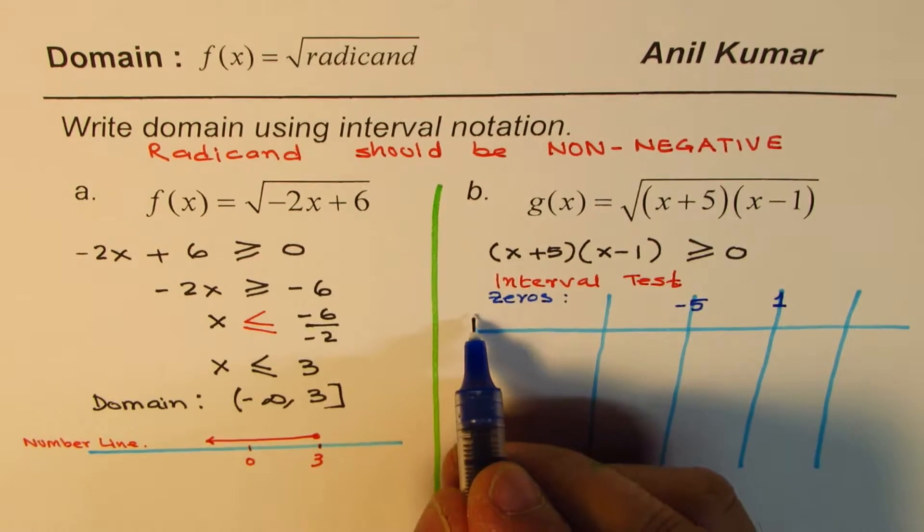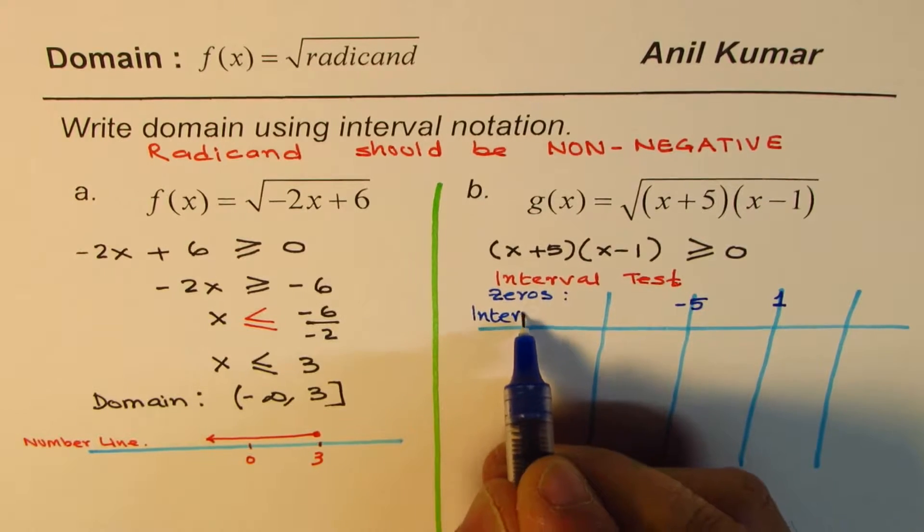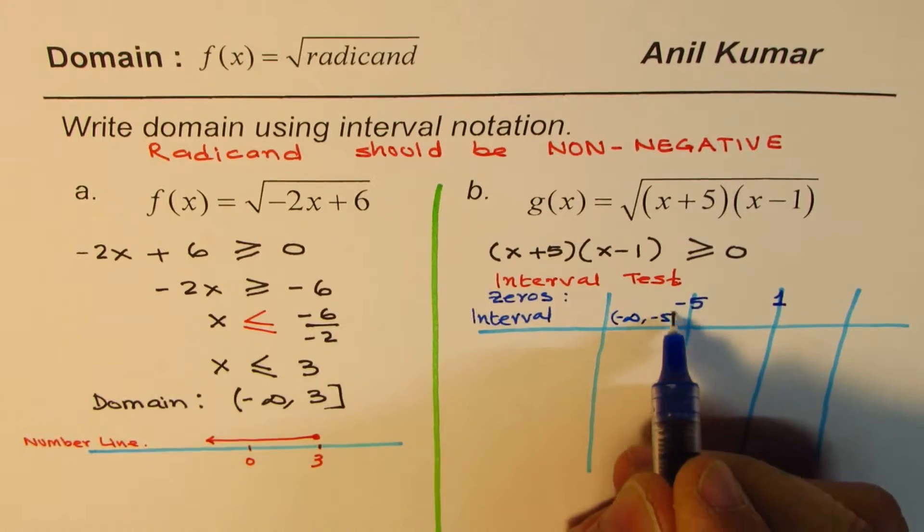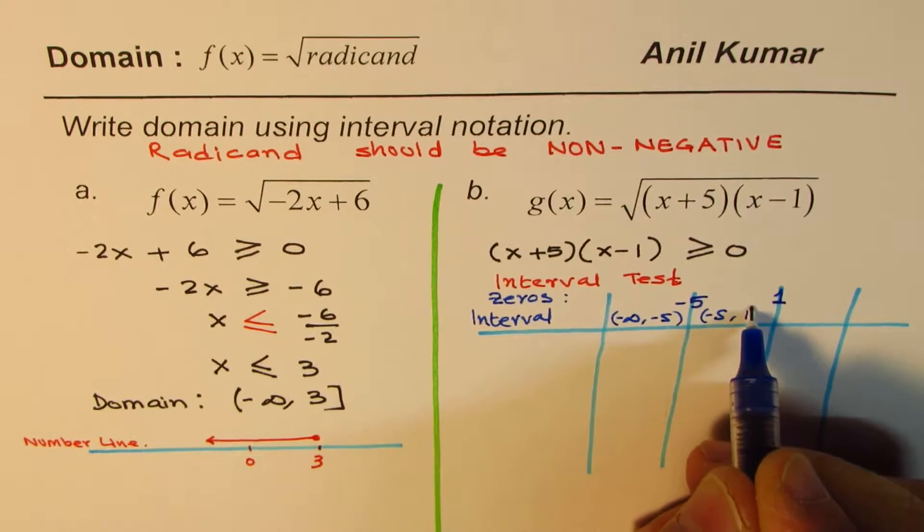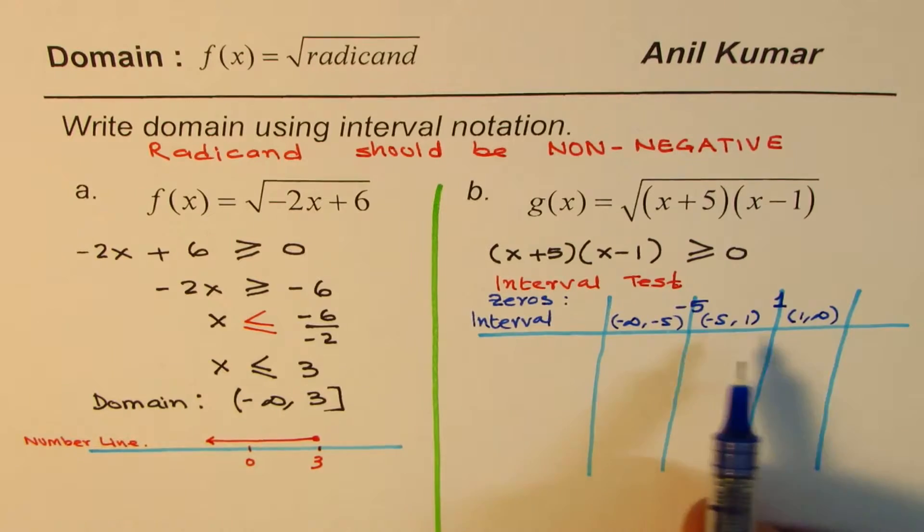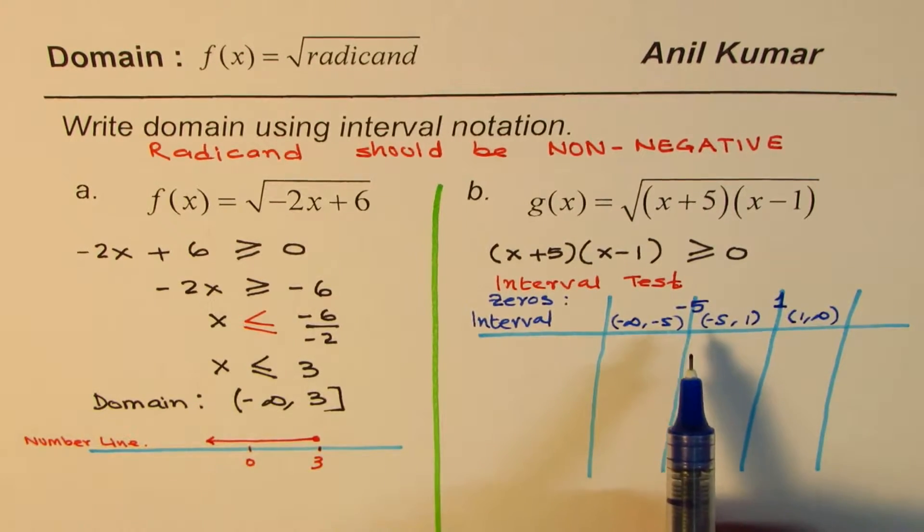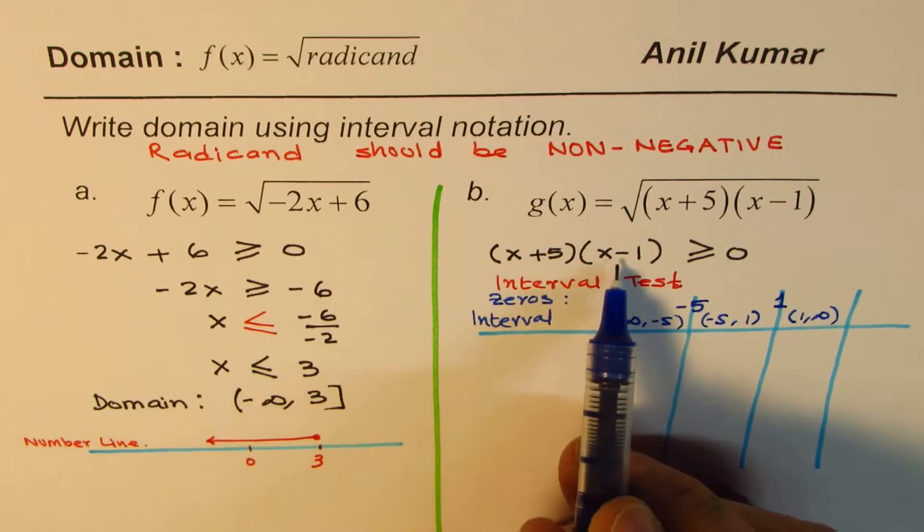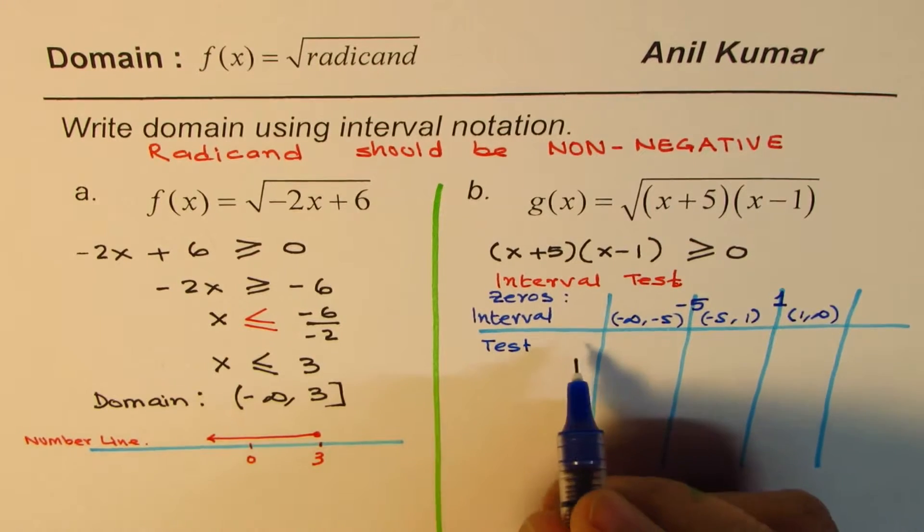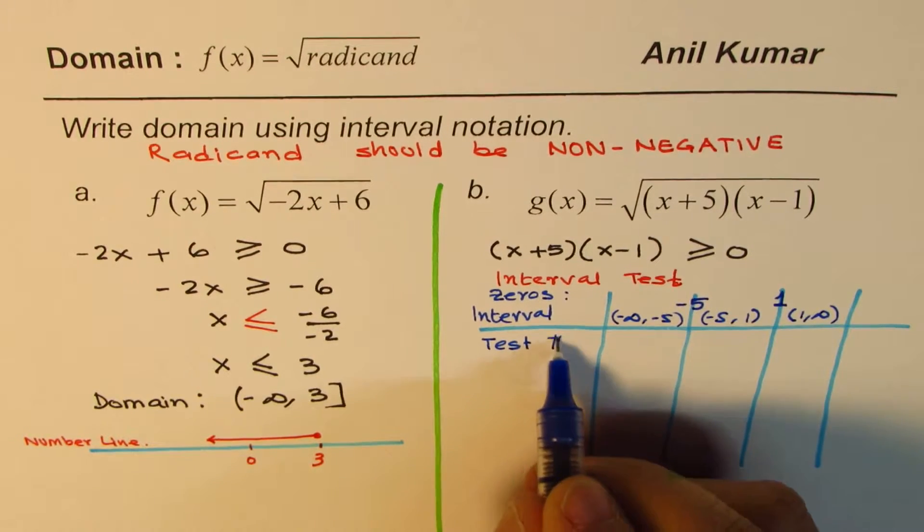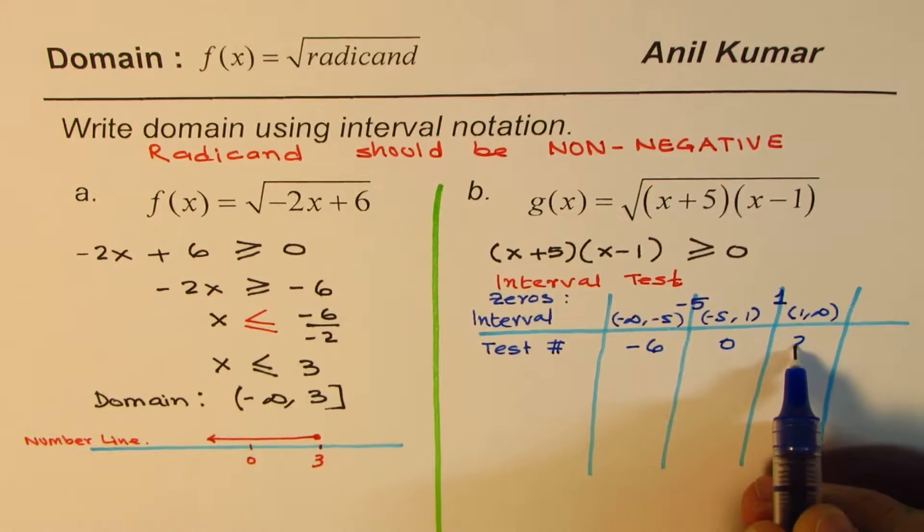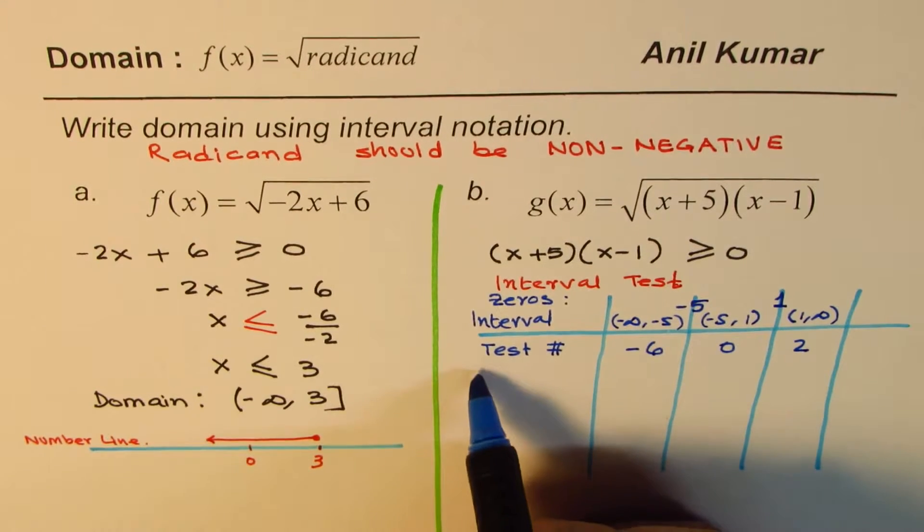These zeros divide the plane into intervals from -∞ to -5, then -5 to 1, and 1 to ∞. These are the three intervals which you get when you have two zeros. We need to test the product of these two linear factors, so let's have a test point for that. The test numbers could be any number within the interval - let's take -6, 0, and 2.